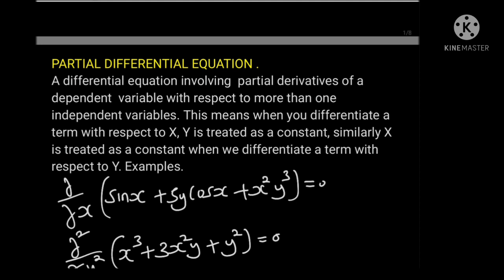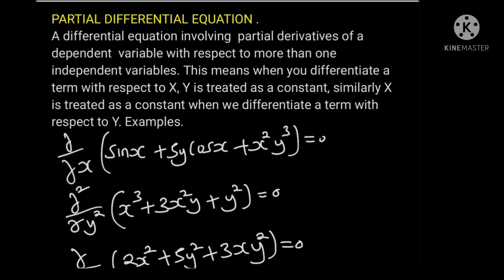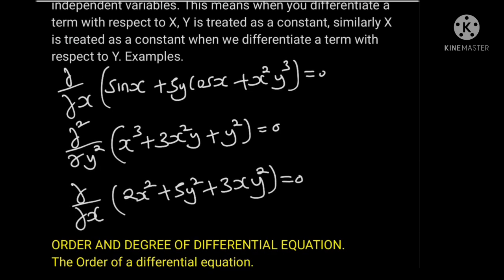This means when you differentiate a term with respect to x, y is treated as a constant. Similarly, x is treated as a constant when we differentiate a term with respect to y. Example: in the first example, we are required to differentiate this equation with respect to x. Therefore, all the y terms will be treated as constants.